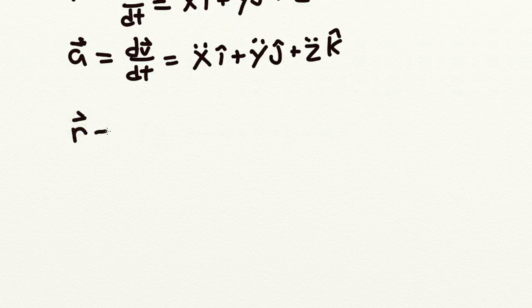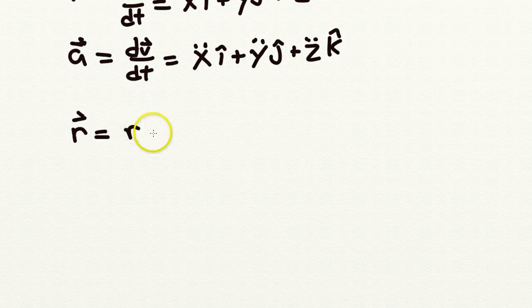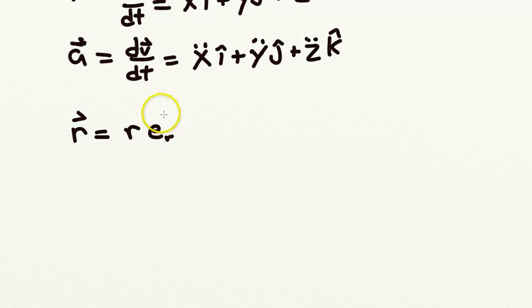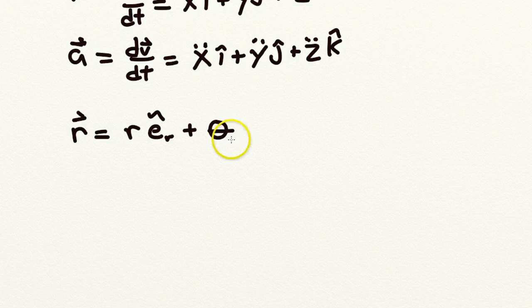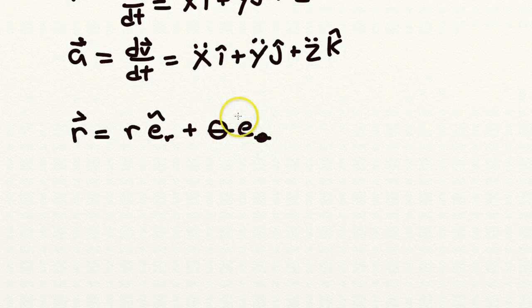Where we have the r-vector is just a distance r in this e sub r-hat direction, and it's at an angle theta in the e-sub theta-hat direction.